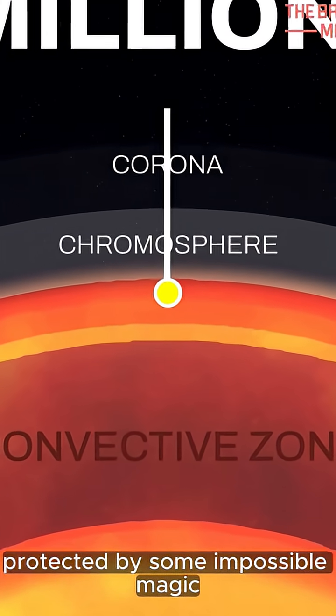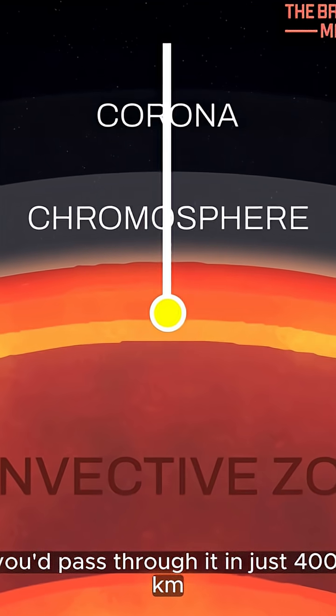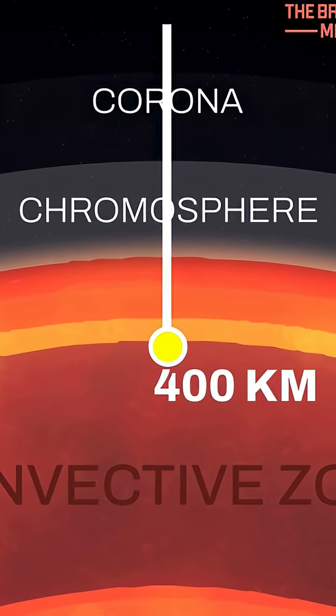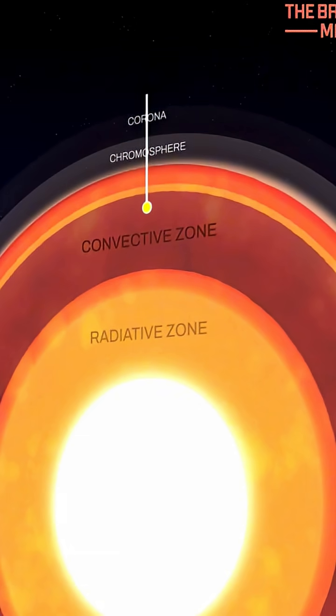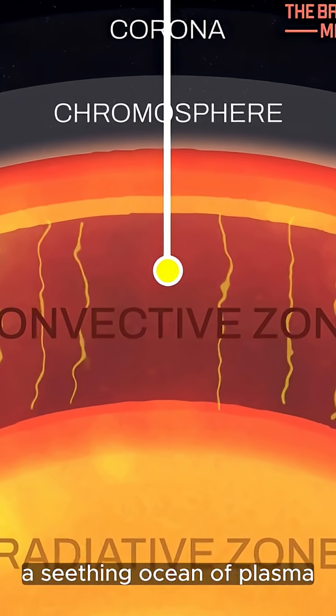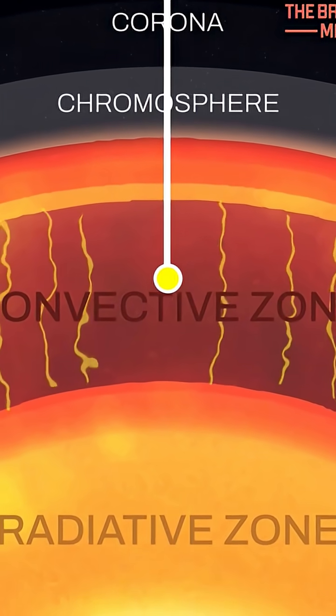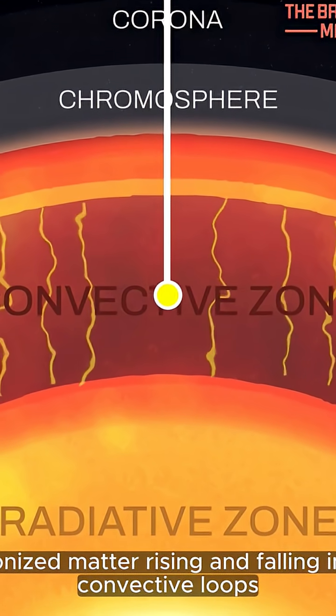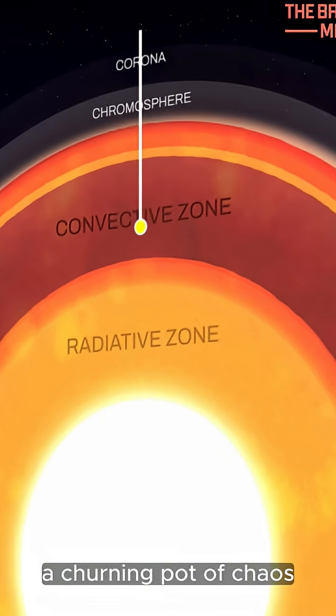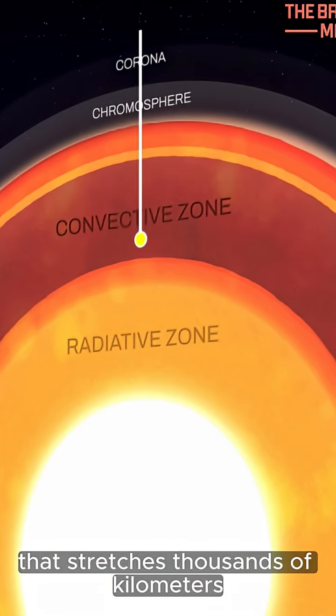Protected by some impossible magic, you'd pass through it in just 400 kilometers. But what waits beneath is worse. A seething ocean of plasma, boiling gas, ionized matter rising and falling in convective loops, a churning pot of chaos that stretches thousands of kilometers.